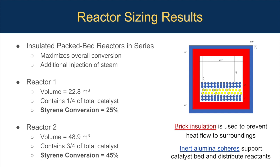This is a summary of our reactor sizing results. We used insulated packed bed reactors in series to maximize overall conversion to styrene and allow for additional steam injection. The first reactor had a volume of 22.8 cubic meters and contained one-quarter of the total catalyst, with a styrene conversion of 25%. The second reactor had a volume of 48.9 cubic meters, containing three-quarters of the total catalyst and allowing for a styrene conversion of 45%. The overall conversion was bounded at 45% by discontinuity in the rate equation. Brick insulation was used to keep reactors as close to adiabatic as possible, and inert aluminospheres were used to support the catalyst bed and distribute gas flow evenly.